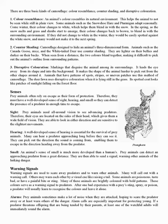A well-developed sense of hearing is essential for the survival of prey animals. Many can hear a predator approaching long before they can see it, and can pick out the direction the sound is coming from, enabling them to escape heading away from the predator. An animal's sense of smell is also much more developed than a human's — prey animals can detect an approaching predator from a great distance and are then able to send a signal, warning other animals of the lurking danger.